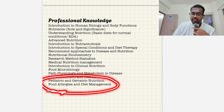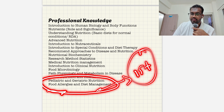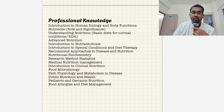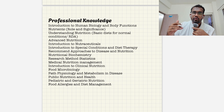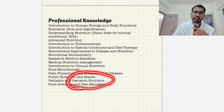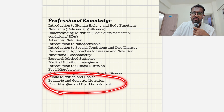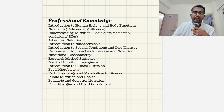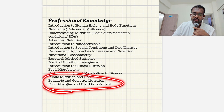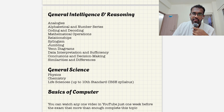Next comes pediatric and geriatric nutrition and food allergies. You will get almost 15 questions totally from these two topics. In pediatric and geriatric nutrition you need to remember the growth stages from baby to toddler, toddler to school-going children, and adult, along with the RDA values for each stage. In geriatric nutrition, mainly focus on protein energy malnutrition (PEM), low calorie intake, and other health conditions. Food allergies is also a very important topic with multiple types listed in my notes.